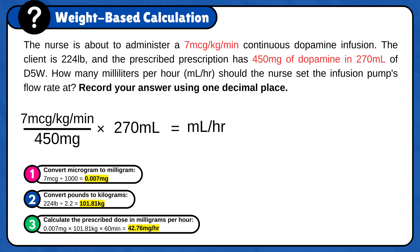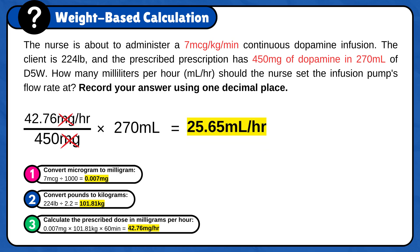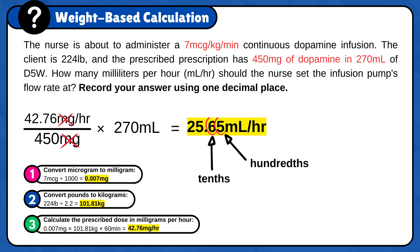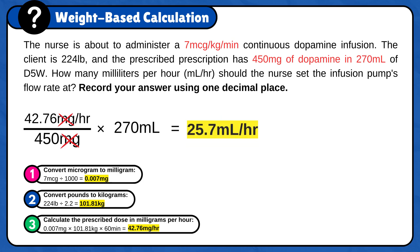Finally, plug the answer into the formula and calculate it: 42.76 milligrams per hour divided by 450 milligrams times 270 milliliters. Milligrams cancel out, and the answer is 25.65 milliliters per hour. Don't forget to round to one decimal place — since the hundredth digit is a number between 5 and 9, round up the number in the tenth place. So the final answer is 25.7 milliliters per hour.